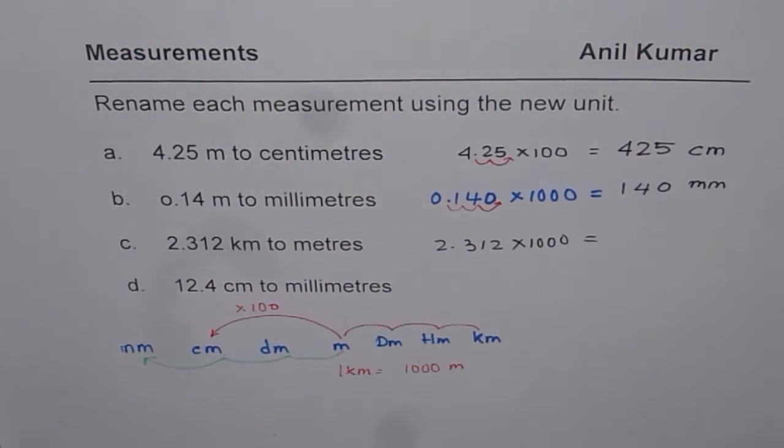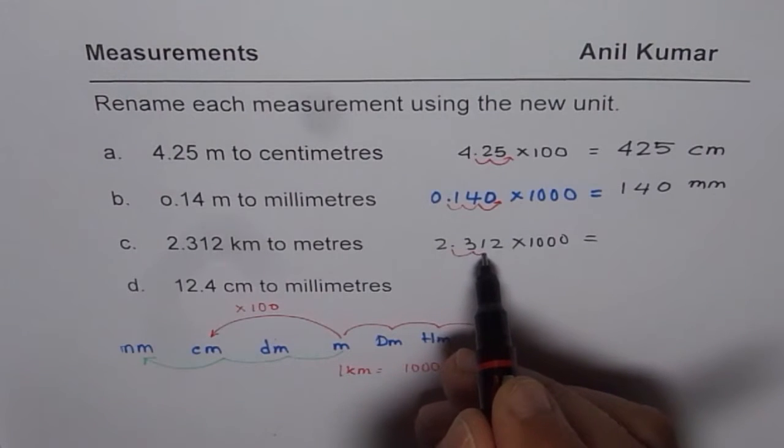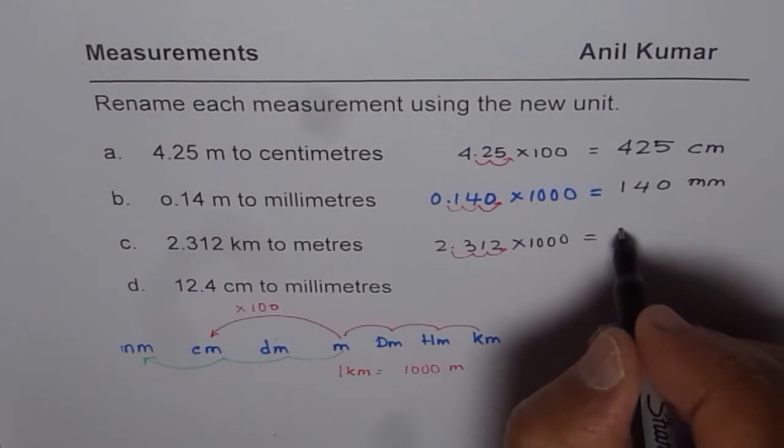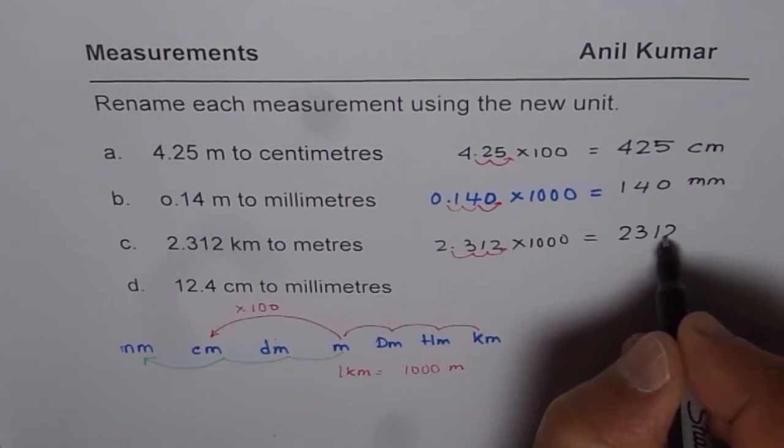Means moving decimal three places to the right. So you get the number 2312. 2312 meters.